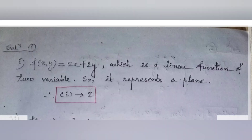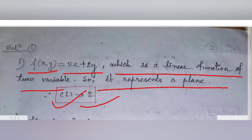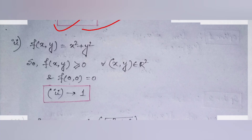For question one, option 1 is f(x,y) = 2x + 2y, which is a linear function of two variables, so it represents a plane. Therefore option number one belongs to graph number two.